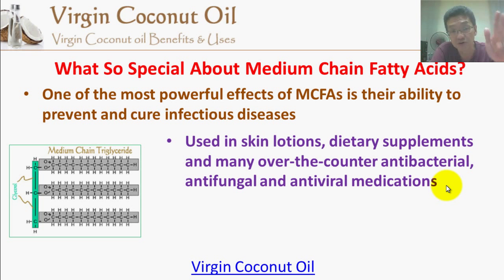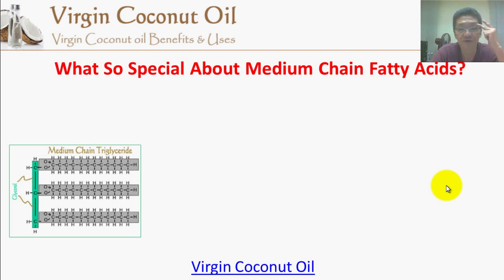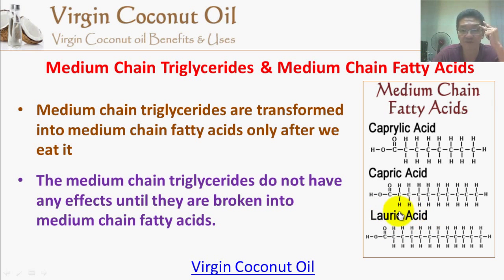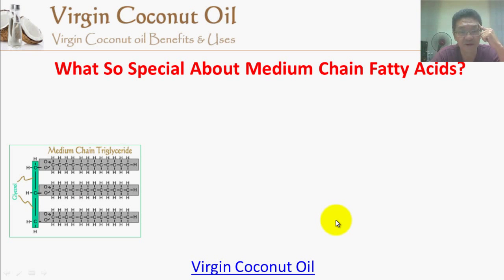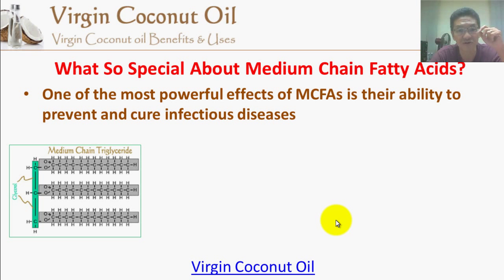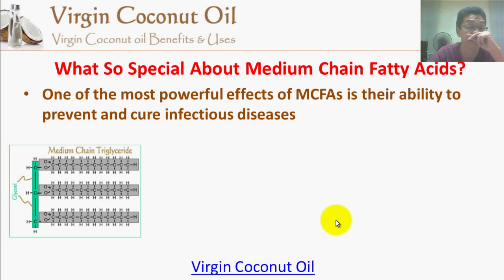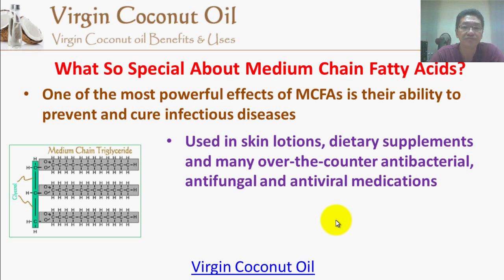Not too many substances in nature possess antiviral properties — only a few — and coconut is one of them, probably the most abundant source. When they first found medium chain fatty acids, it was from a seed known as the laurel seed, and that is how lauric acid got its name. Laurel seed contains about 37% medium chain fatty acids, which is quite high, but coconut oil contains close to 50% medium chain fatty acids — making it the most abundant source.